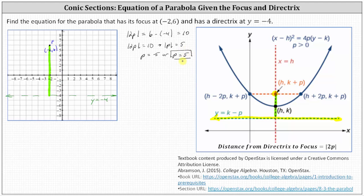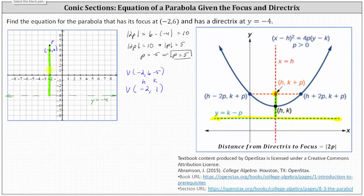This also indicates that the vertex is going to be five units below the focus, and therefore the vertex is given by the ordered pair negative two comma six minus five. Notice I'm subtracting five from the y-coordinate of the focus because the vertex is below the focus. Simplifying, the vertex is the point negative two comma one. So now we know p equals five, h equals negative two, and k equals positive one. Let's go ahead and plot the vertex — negative two comma one is here. Notice this vertex is in the middle between the directrix and the focus, and the parabola opens up and would look something like this.